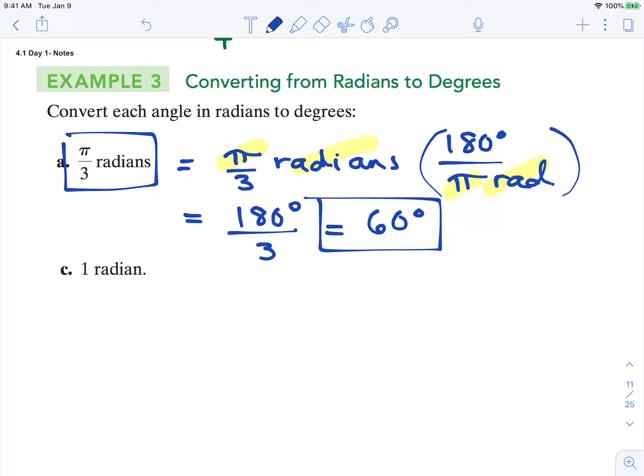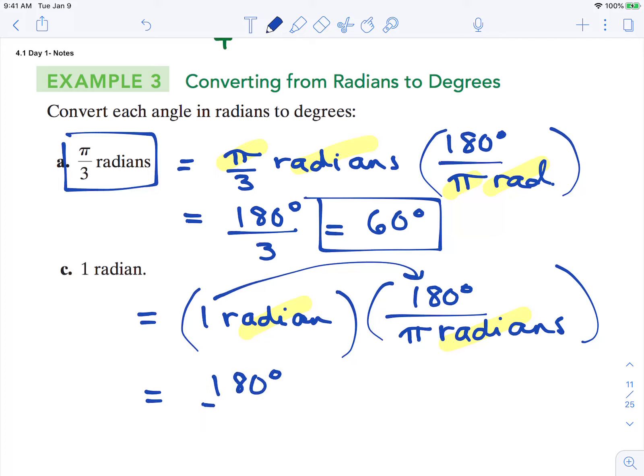Last one of these. 1 radian. Multiply by the same ratio. 180 degrees over π radians. Cancel the radians notation. Multiply across. So 1 times 180 is 180 degrees over π. Then you can enter that into your calculator and you get approximately 57.3 degrees. So one radian is approximately 57.3 degrees, so pretty close to 60 degrees, one radian measure.